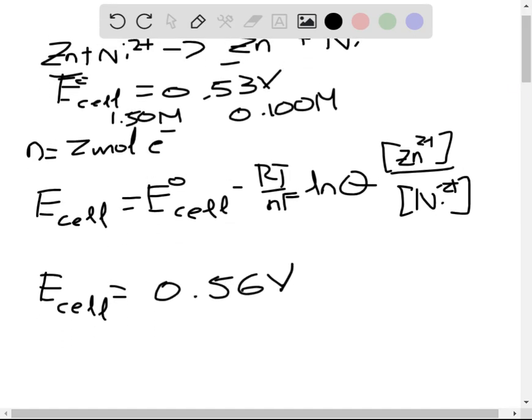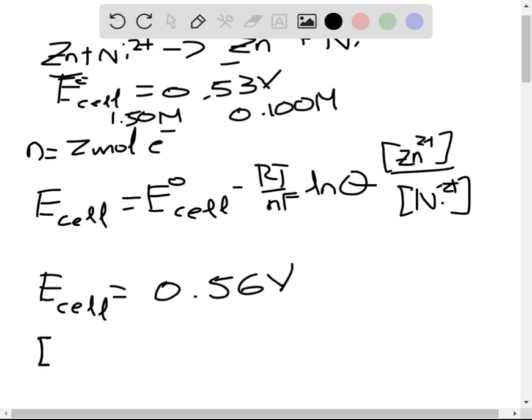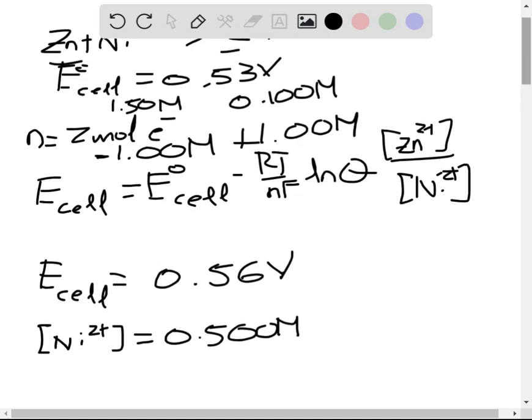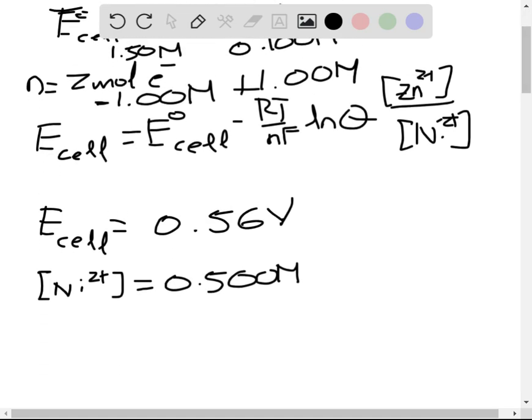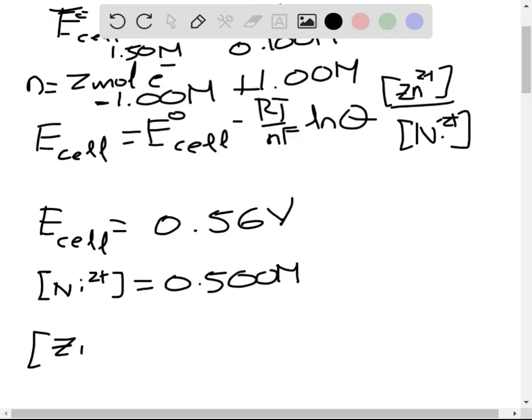And in the next part, we're asked what would happen when the concentration of nickel would be equivalent to 0.500 molars. That means that there would have to be a change of 1.00 molar of a decrease in concentration of nickel. And that decrease would contribute to an increase in the concentration of zinc, since this is a one-to-one stoichiometric ratio. So the concentration of zinc now would be equivalent to 1.100 molars.